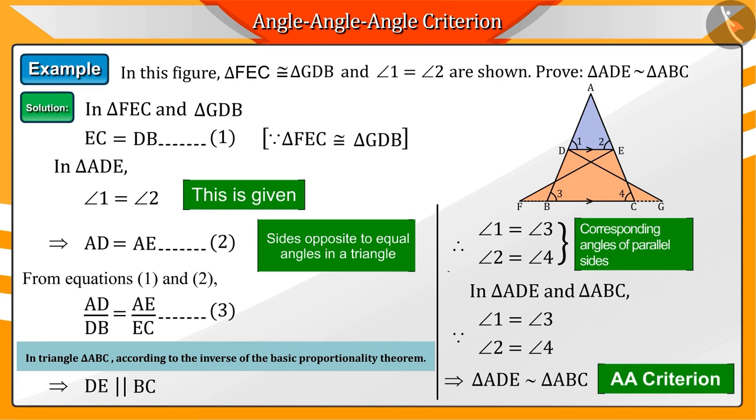Hence, by the AA criteria, triangles ADE and ABC become similar. This is what we had to prove.